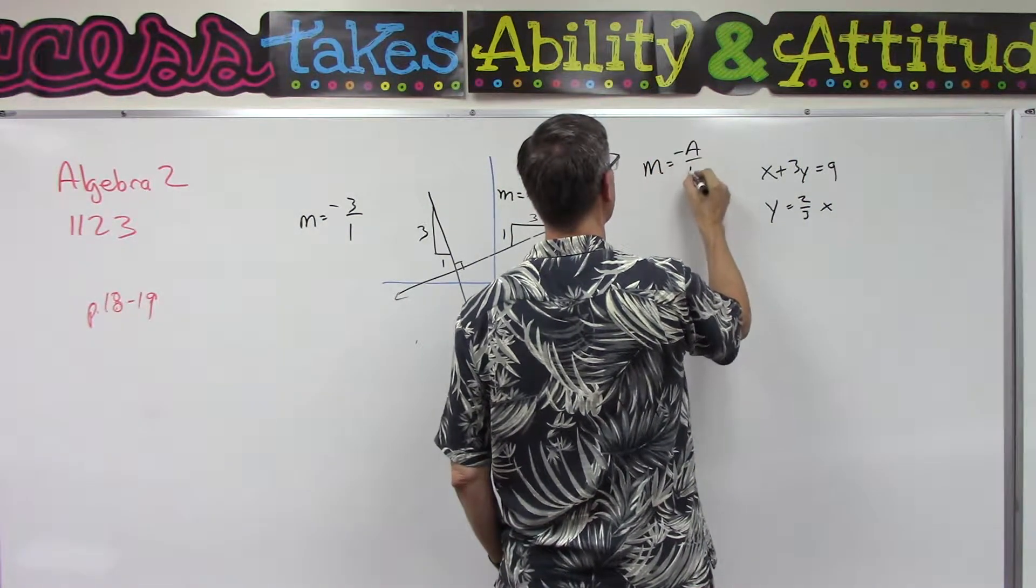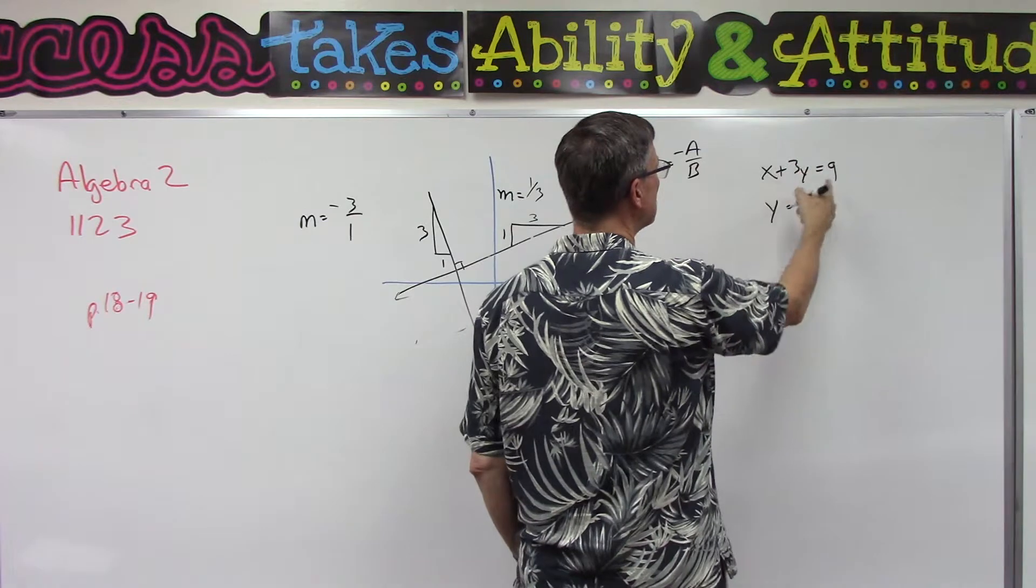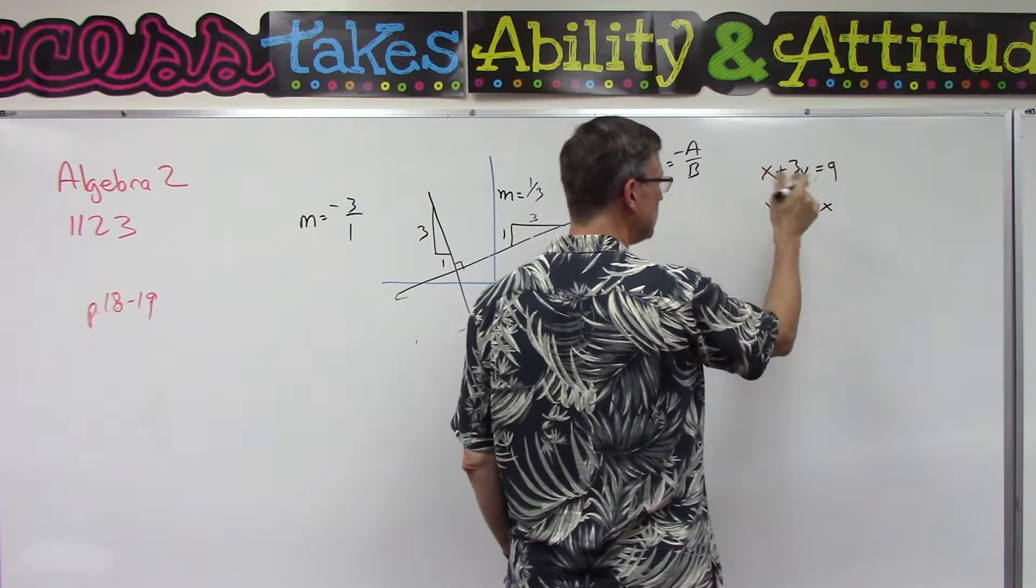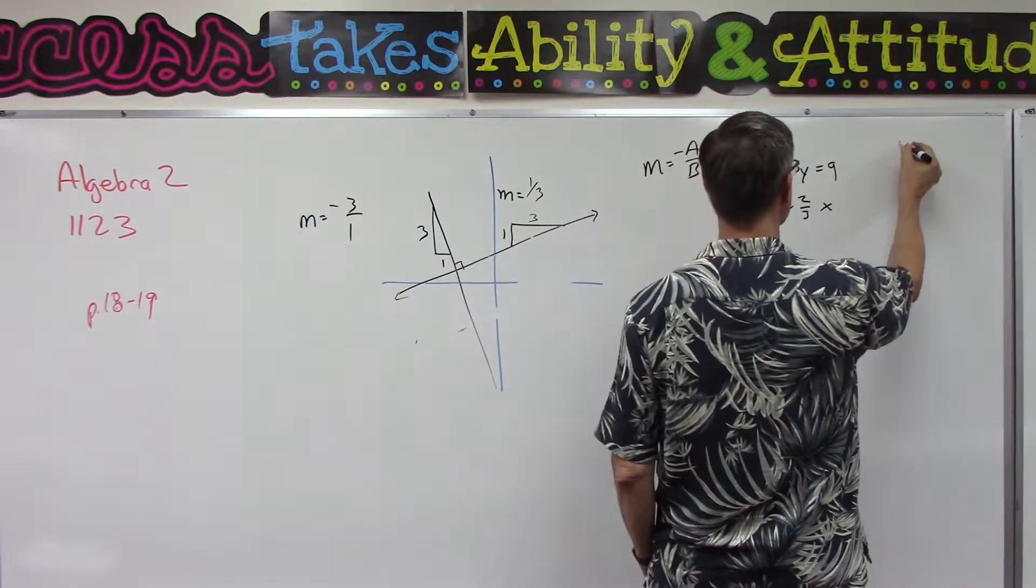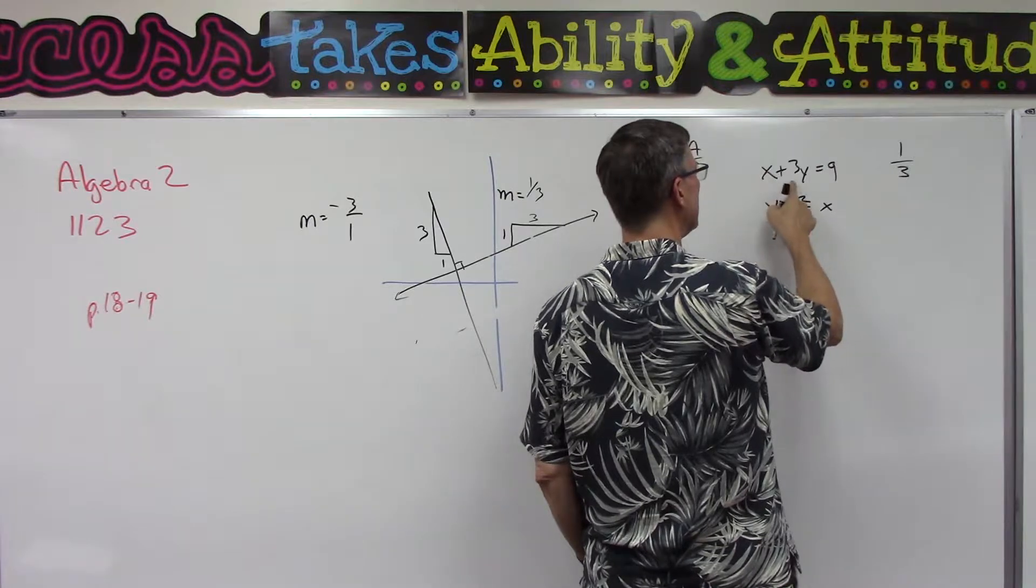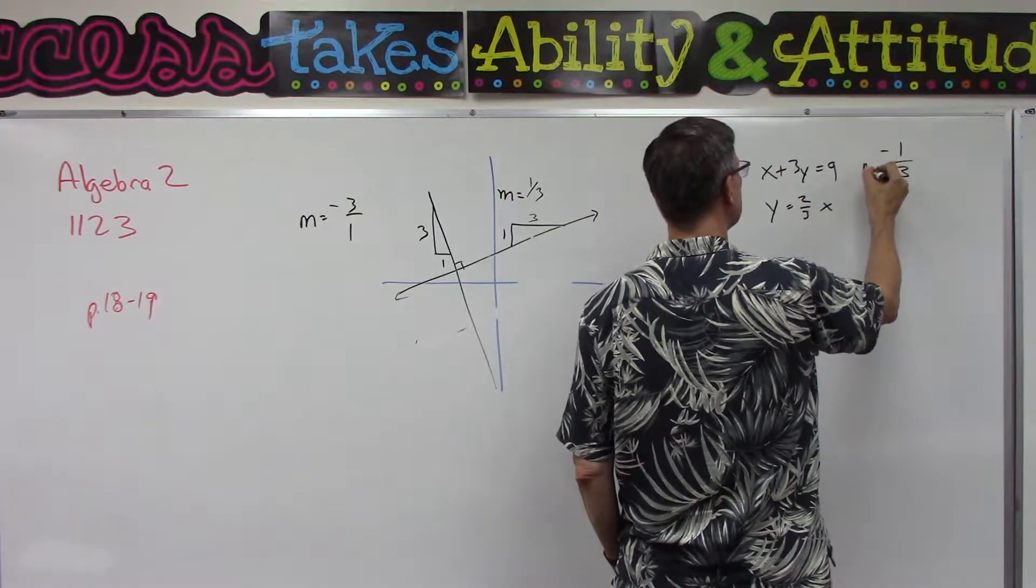So remember that the slope, we could say, is negative a over b. So that would be a quick way of doing this. This one's already in the ax plus by equals c, so that one's good. I can take the x over the y, so the 1 over 3, change it to its opposite, and that is the slope.